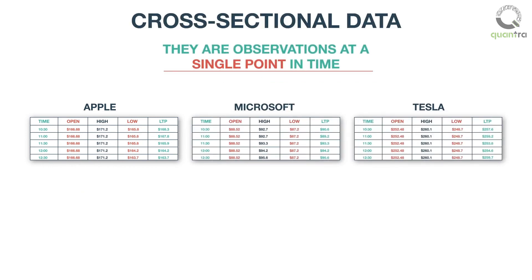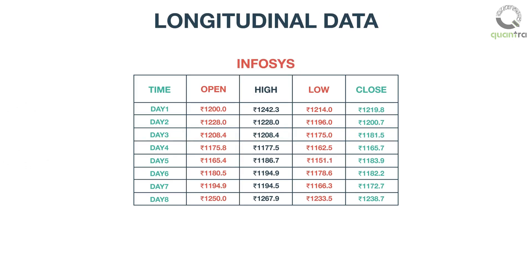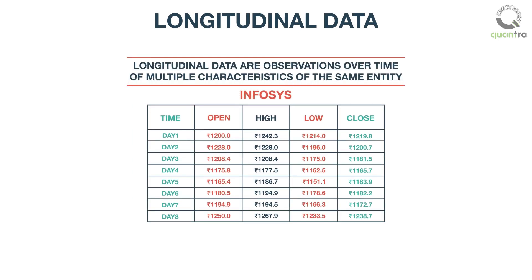Cross-sectional data are the observations at a single point in time. For example, OHLC data of Apple, Microsoft, and Tesla at exactly 11:30 a.m. is a cross-sectional data. Further, time series and cross-sectional data can be pooled in the same data set. Longitudinal data are the observations over time of multiple characteristics, but of the same entity.